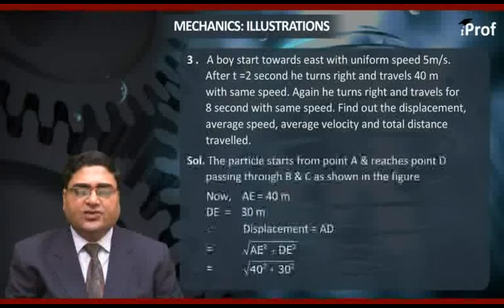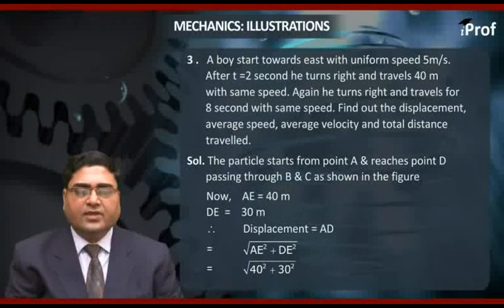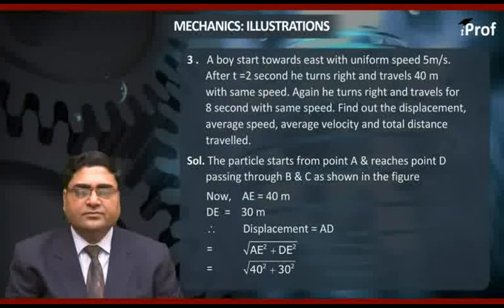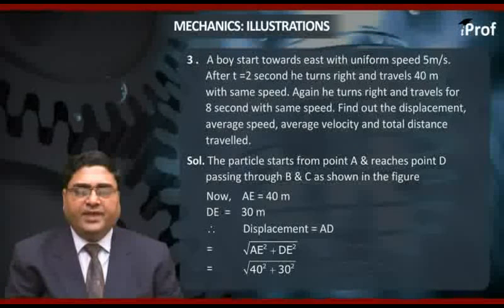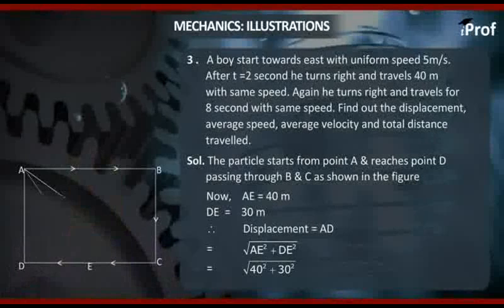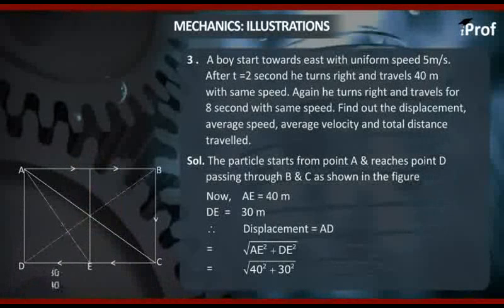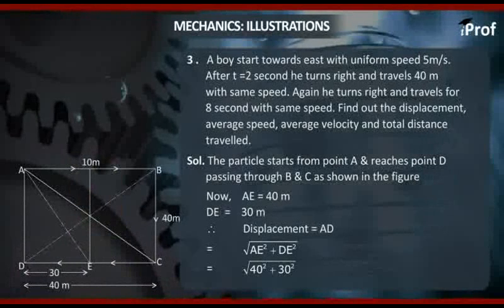Let's see the solution. The particle starts from point A and reaches point D passing through B and C as shown in the figure. In the given figure, AB is 10 meter.